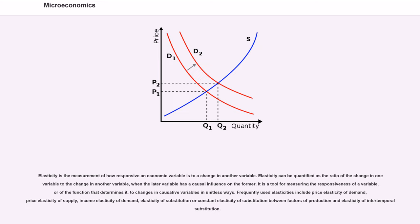Elasticity is the measurement of how responsive an economic variable is to a change in another variable. Elasticity can be quantified as the ratio of the change in one variable to the change in another variable when the latter variable has a causal influence on the former. It is a tool for measuring the responsiveness of a variable, or of the function that determines it, to changes in causative variables in unitless ways.